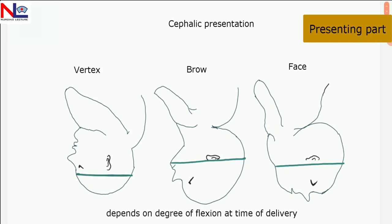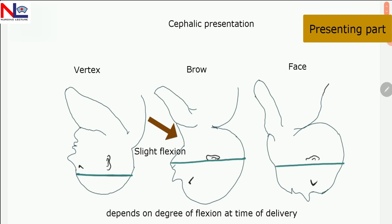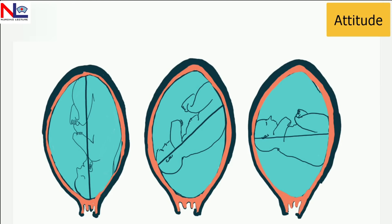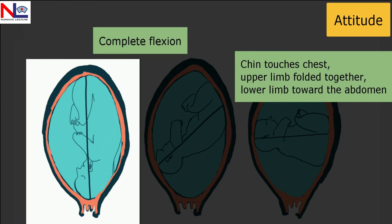Complete flexion results in the vertex presenting part. Slight flexion results in the brow presenting part. Deflection of the head results in the face presenting part. The attitude is the relationship of the body parts of the fetus to each other. In complete flexion, the fetus occupies the ovoid of the uterus — the chin touches the chest, the upper limbs are folded together, and the lower limbs fold toward the abdomen.